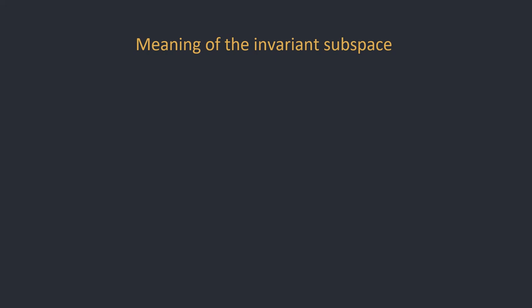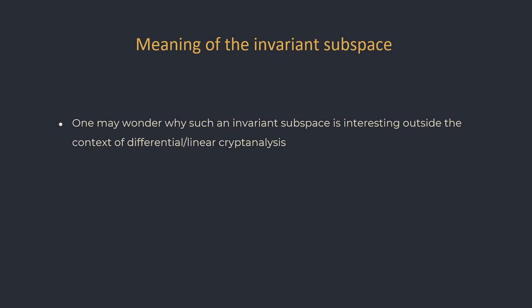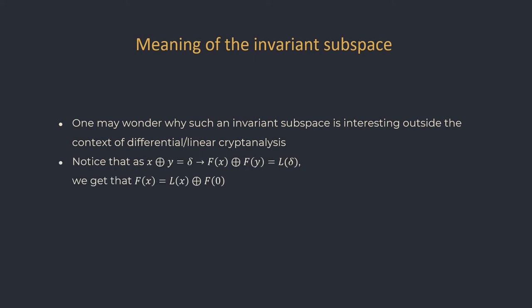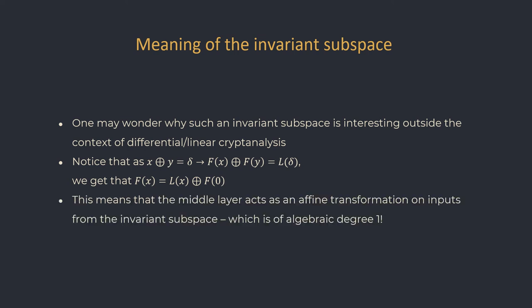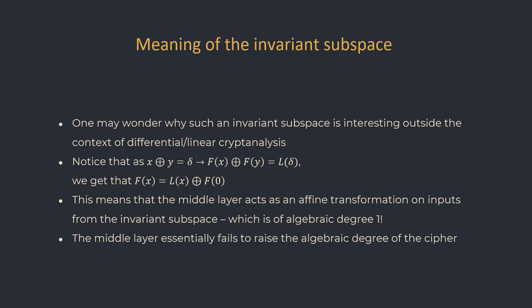Some of you may remember that I promised the invariant subspace can be used to enable an algebraic attack on Starkad. While it's obvious how such an invariant subspace is useful for differential or linear attacks, it may not be so clear for other purposes. Not activating any S-box means that if we take two inputs x and y with difference delta from the subspace, then the difference between the outputs of the middle layer — f(x) and f(y) — is equal to L of delta, where L is some power of the round matrix. If we choose x from the subspace and y equals 0, we get that f(x) equals L(x) plus f(0), which is a constant. So the middle layer acts like an affine transformation for inputs from the subspace, with algebraic degree 1.